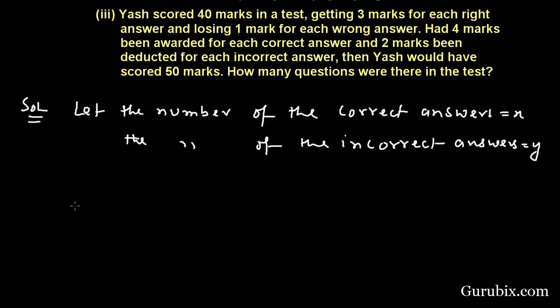We have 40 marks in case 1 when 3 marks are added for right answer, this means 3x, and 1 mark deducted for wrong answer, minus y. So this is our equation number 1: 3x - y = 40.